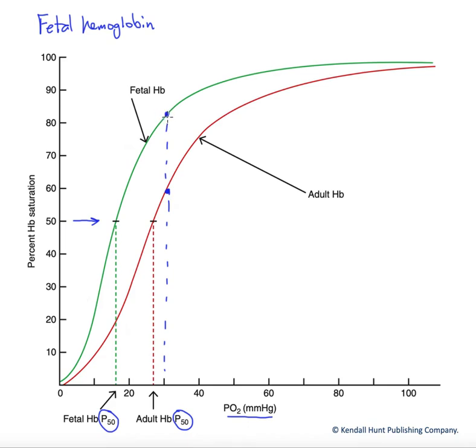But in short, the fetus gives up carbon dioxide and this causes a shift to the left of its curve, indicating a higher affinity due to the loss of that carbon dioxide. The maternal blood picks up that carbon dioxide. This would cause a rightward shift and a decrease in affinity.